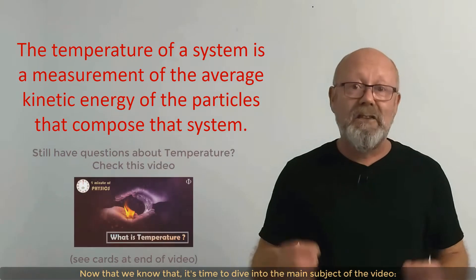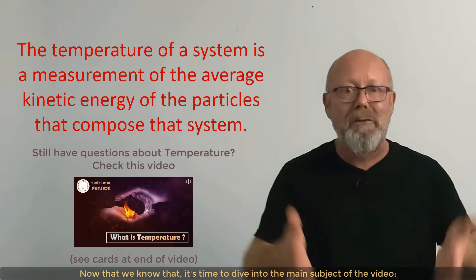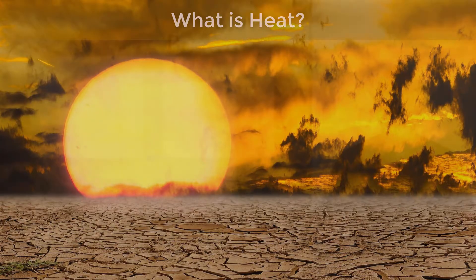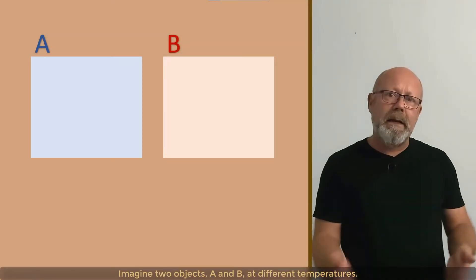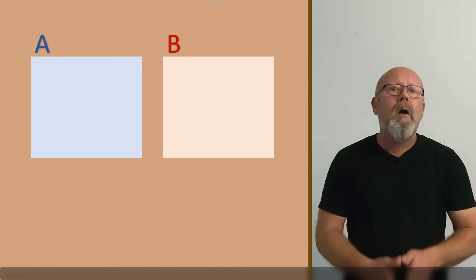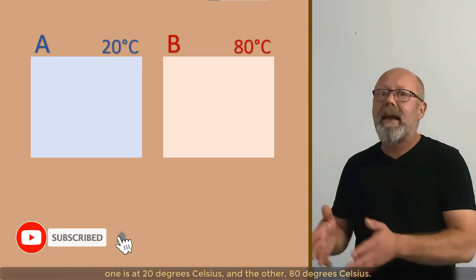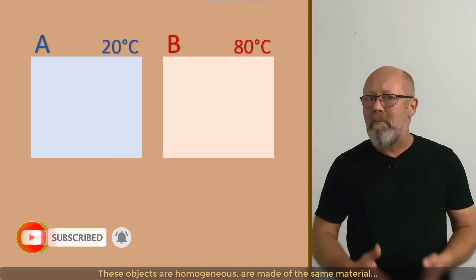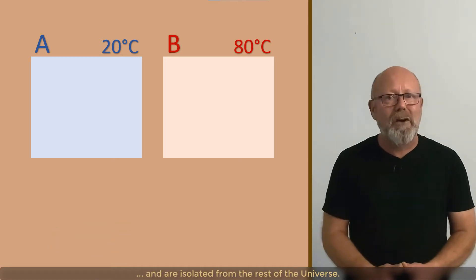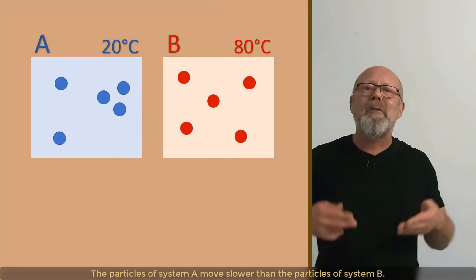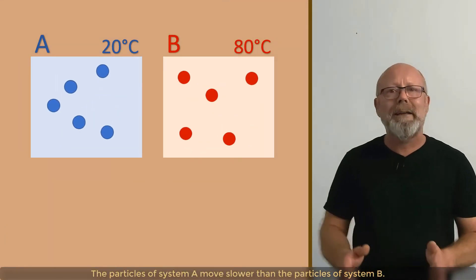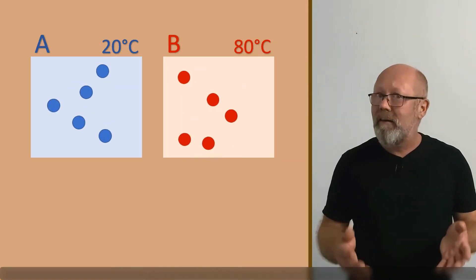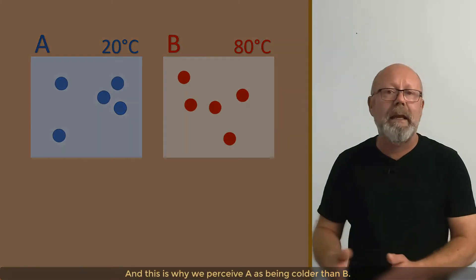Now that we know that, it's time to dive into the main subject of the video. What is heat? Imagine two objects, A and B, at different temperatures. One is at 20 degrees Celsius, and the other is at 80 degrees Celsius. These objects are homogeneous, are made of the same material, and are isolated from the rest of the universe. The particles of system A move slower than the particles of system B. This is because they have less kinetic energy, and this is why we perceive A as being colder than B.